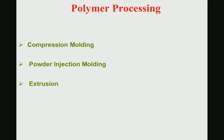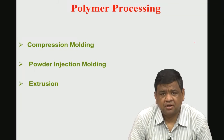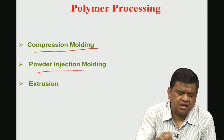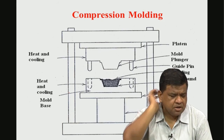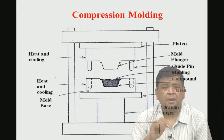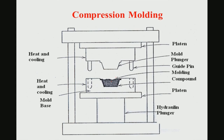Three processing approaches will now be covered: compression molding, injection molding, and extrusion. In compression molding, polymeric powders are placed in a mold cavity and a plunger applies pressure from the top, compressing the material until it takes the shape of the mold cavity. The temperature requirements in polymer processing are quite low compared to metals and ceramics.